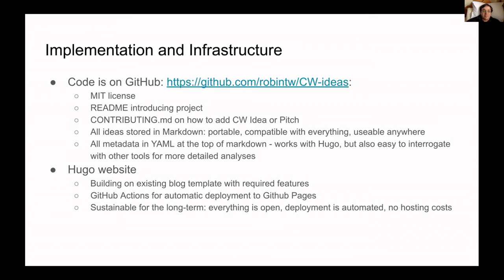We've automated things as much as possible. The Hugo website is built on a pre-existing template, so we weren't reinventing the wheel, but we've added a number of individual pages useful for our particular use case. We have GitHub Actions giving automatic deployment to GitHub Pages. This is all fully sustainable — everything's open, everything's in standard formats, there's no lock-in, deployment is automated, and there are no hosting costs because it's all on GitHub Pages.